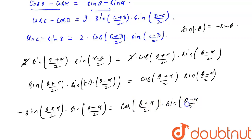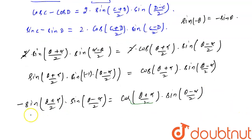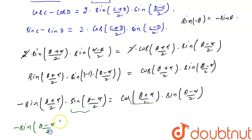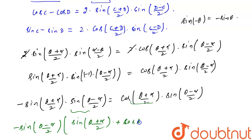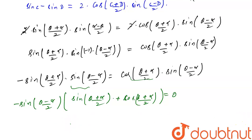Now we take this term to the left hand side and take sin((θ-α)/2) as common. With the minus sign, it becomes: -sin((θ-α)/2) · [sin((θ+α)/2) + cos((θ+α)/2)] = 0.